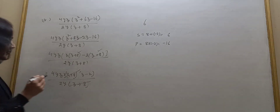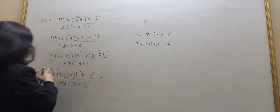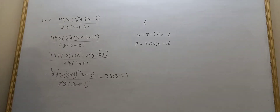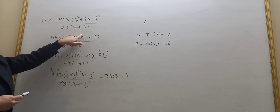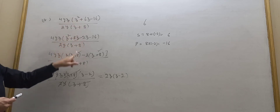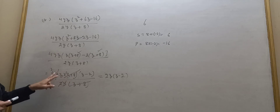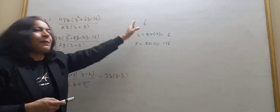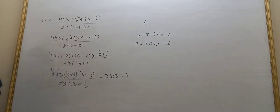Cancel z plus 8. Then 4 and 2: 2 goes, leaving 2. y cancels with y. So your answer is 2z into z minus 2. Some students may find this confusing because we split the middle term, took common factors, regrouped, took the common factor again, and then did the cancellation step. Students who find it confusing should do the middle term splitting separately first, as I showed in the previous part — it will be easier to understand.